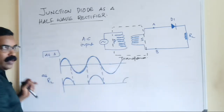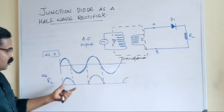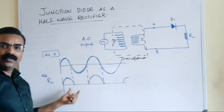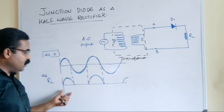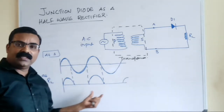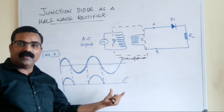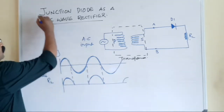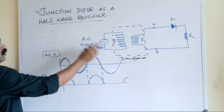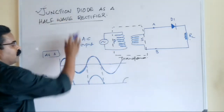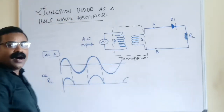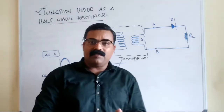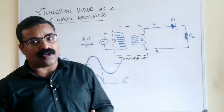So what actually happens is that the AC is being converted into DC, but it is not a full wave — it is a half wave rectification. That is the reason a junction diode in this configuration is used as a half wave rectifier. It is one of the very important topics for your board exam as well as your competitive exam.